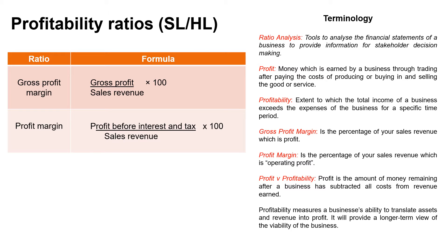There's an important difference between profit and profitability. Gross profit margin shows the percentage of your sales revenue which is profit — profit from trading. It's the money you earn from selling goods or services, take away the cost of those goods or services. You're looking to make the difference between the two as large as possible. Profit margin is gross profit minus the rest of your operating expenses — the profit from your normal day-to-day business activities.